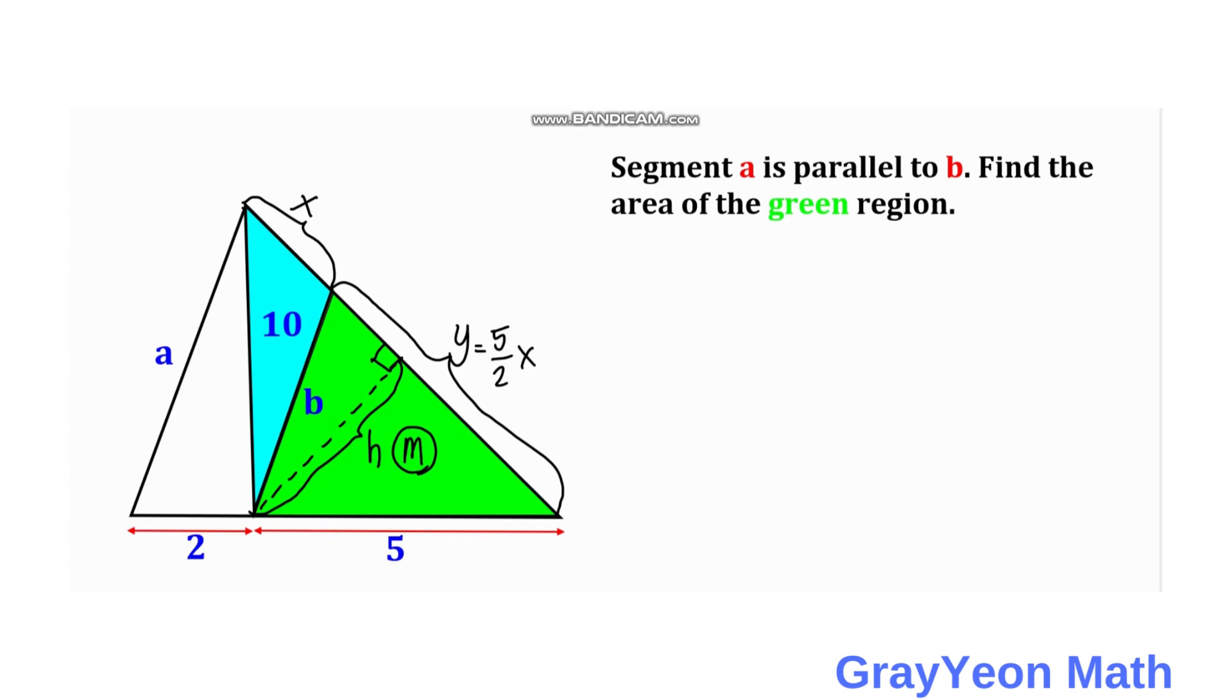We write the equation: m equals 1 half times the base, which for the green is 5 halves x, and the height is h.